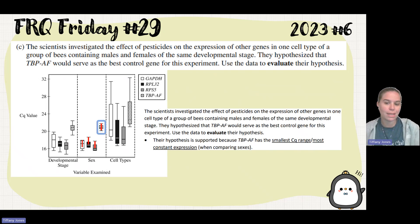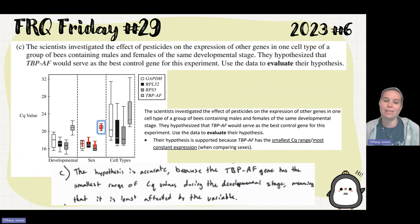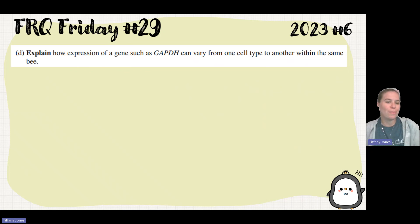So their hypothesis is supported because TBPAF has the smallest Cq range and the most constant expression when comparing the sexes. The student said the hypothesis is accurate because the TBPAF gene has the smallest range of Cq values during the developmental stage, meaning that it is the least affected by the variables.